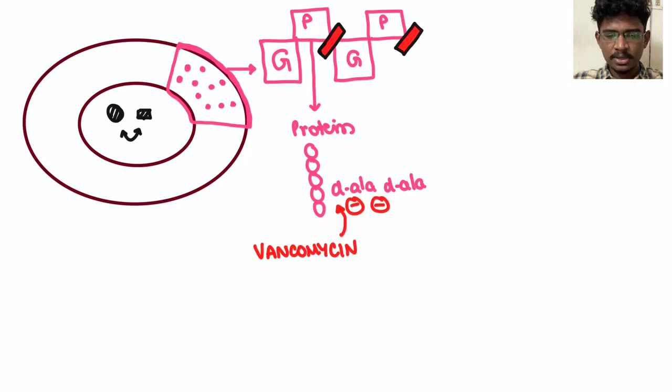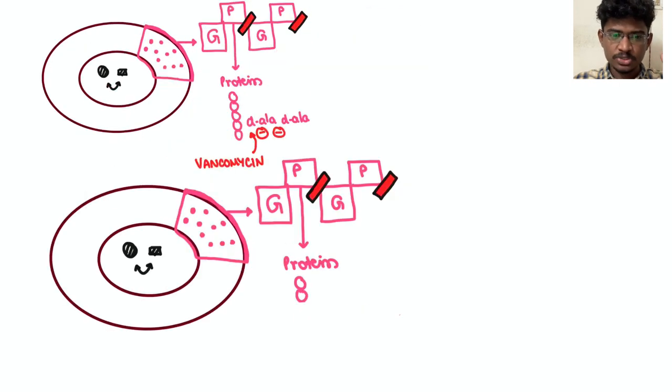So with this protein moiety only, these two glucose molecules stick to each other - this is trans glycosylation step. This step is inhibited by vancomycin by binding to the D-ala-D-ala, so that the two glucose molecules are not at all bound to each other. Thus it is a bactericidal antibiotic.